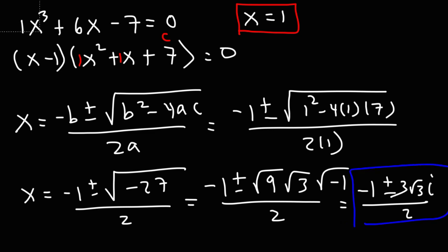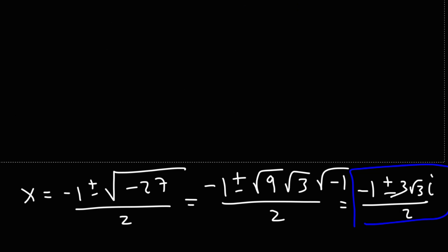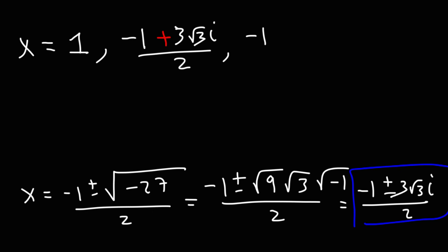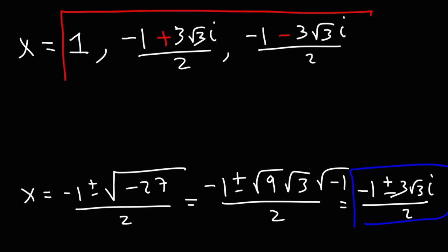Let's write out each individual solution. We have one real solution: x is equal to 1. And we have two imaginary solutions: the first is (negative 1 plus 3 root 3 times i) divided by 2, and the second is (negative 1 minus 3 root 3 times i) divided by 2. Those are the three solutions for this polynomial equation.